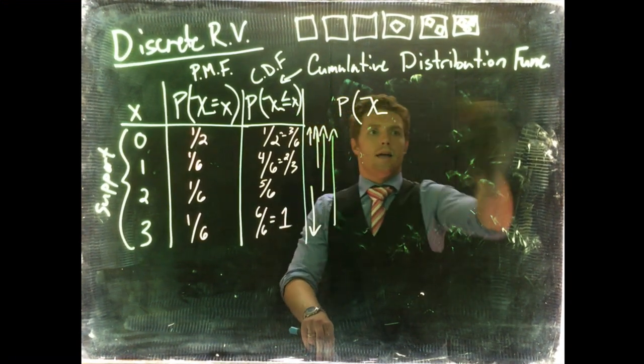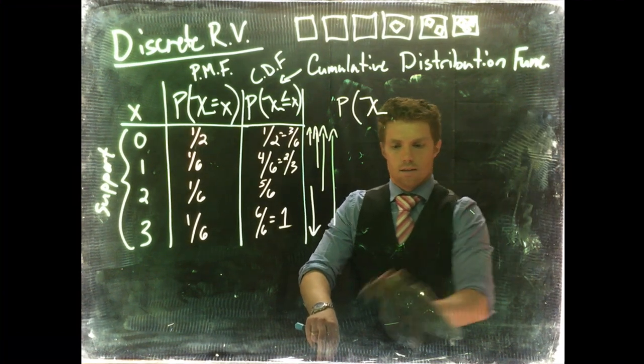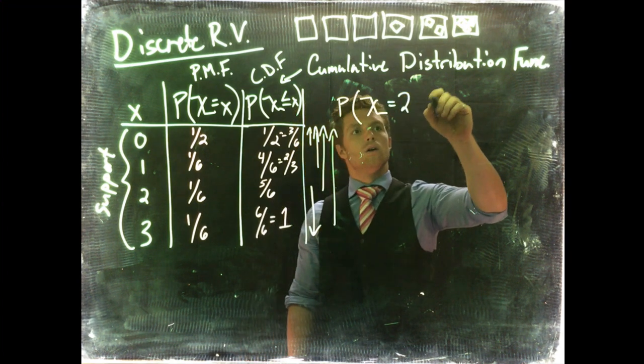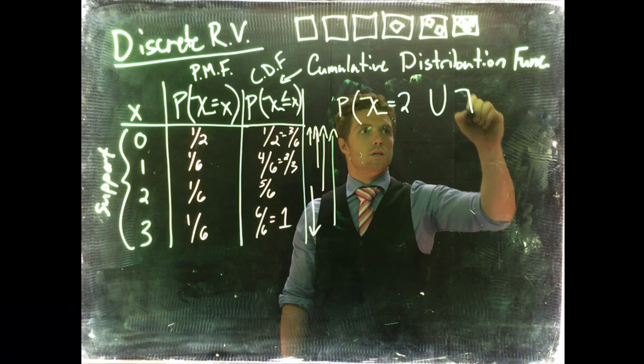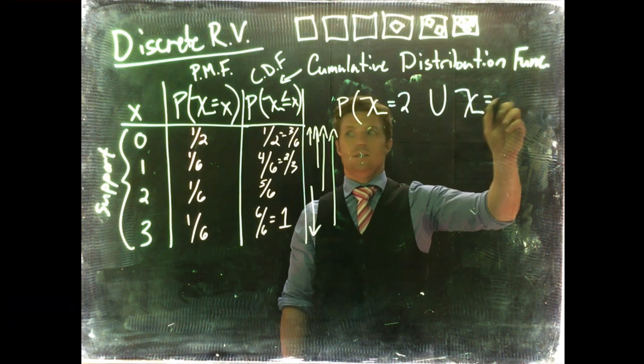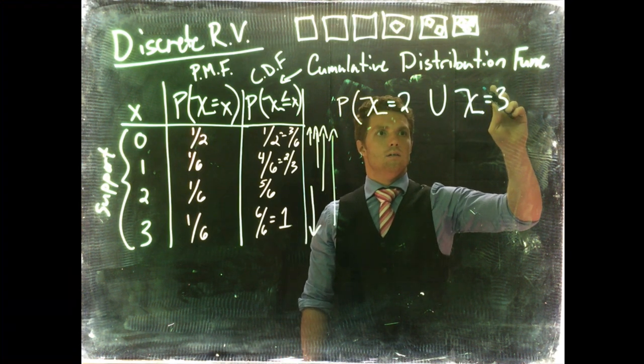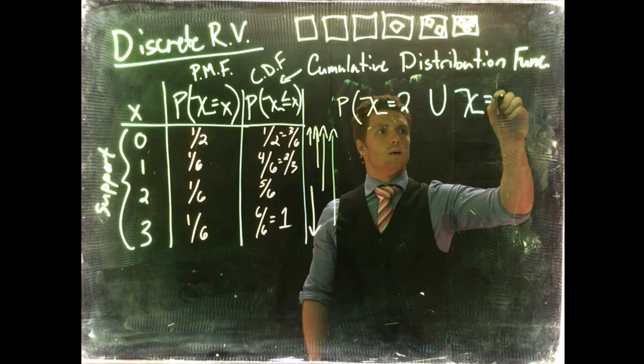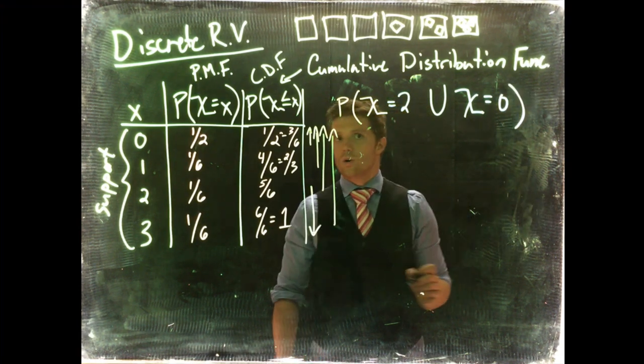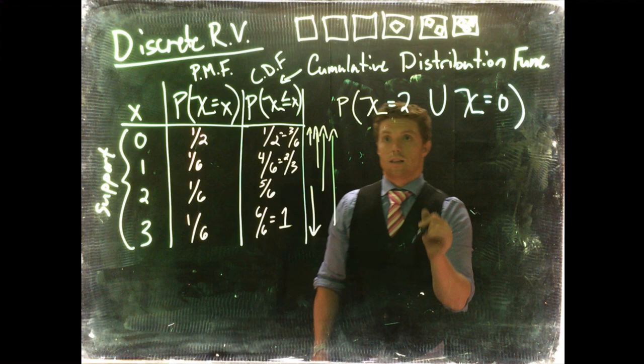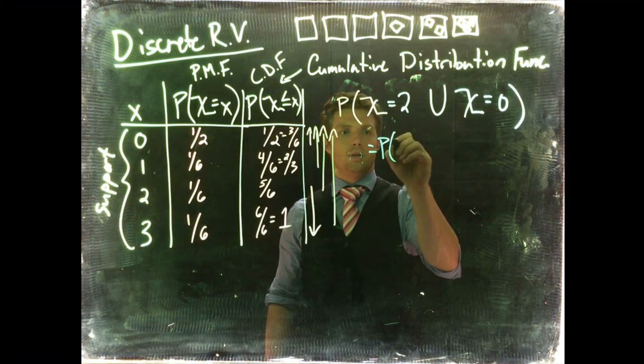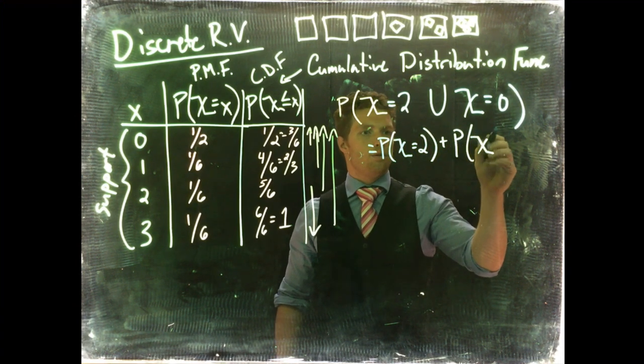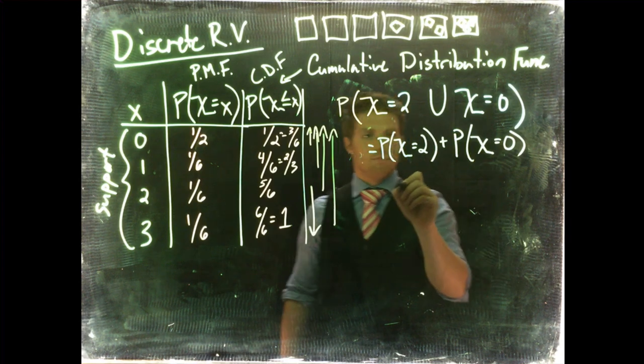Okay, so let's do the probability of X is equal to 2 or, I'll do union, the discrete random variable is equal to 3. Ah, let's not do 3, that's boring. Let's do 0. 2 or 0. Okay, so we just break this down like how we've done before. So this is equal to the probability of X equaling 2 plus the probability of our discrete random variable equaling 0 minus our intersection. Probability of X equals 2 intersect probability of X equaling 0.